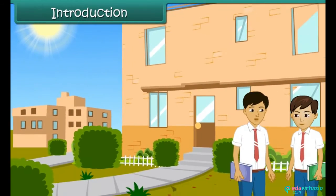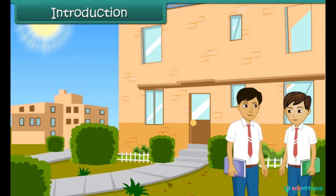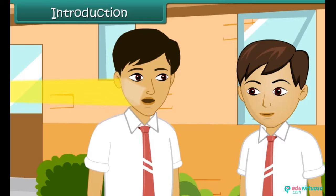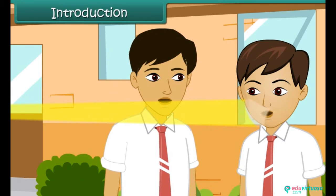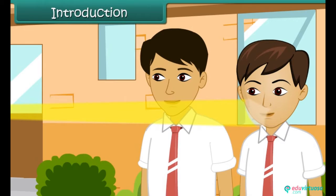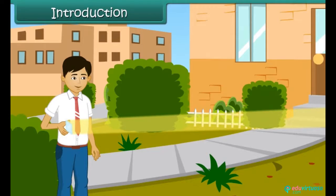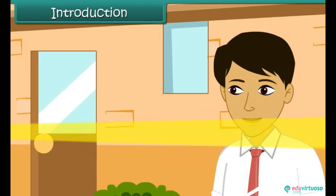It is recess time at school. You and your friends are out in the lawns. Suddenly a bright light hits you in the eye. You and your friends move to a different location. This time the bright light hits your friend. The bright light seems to be following you.